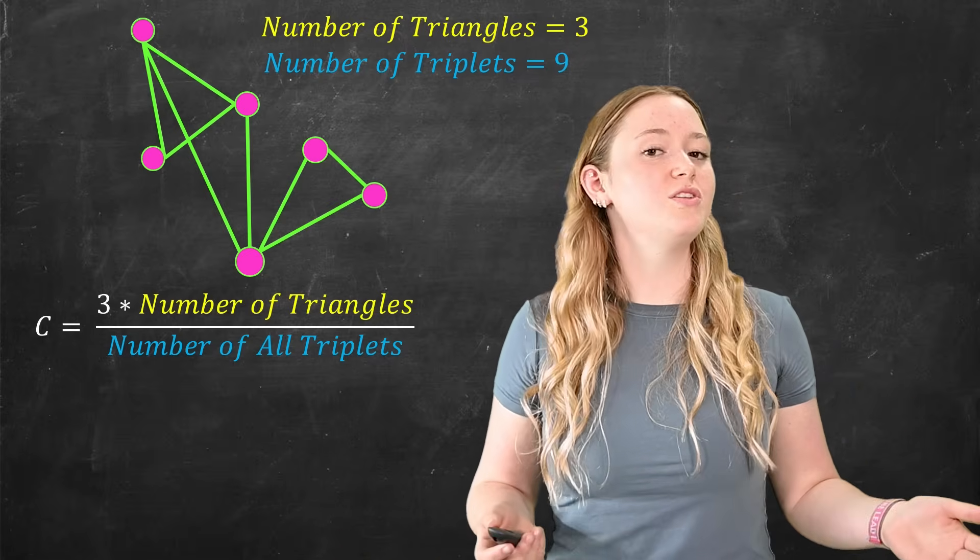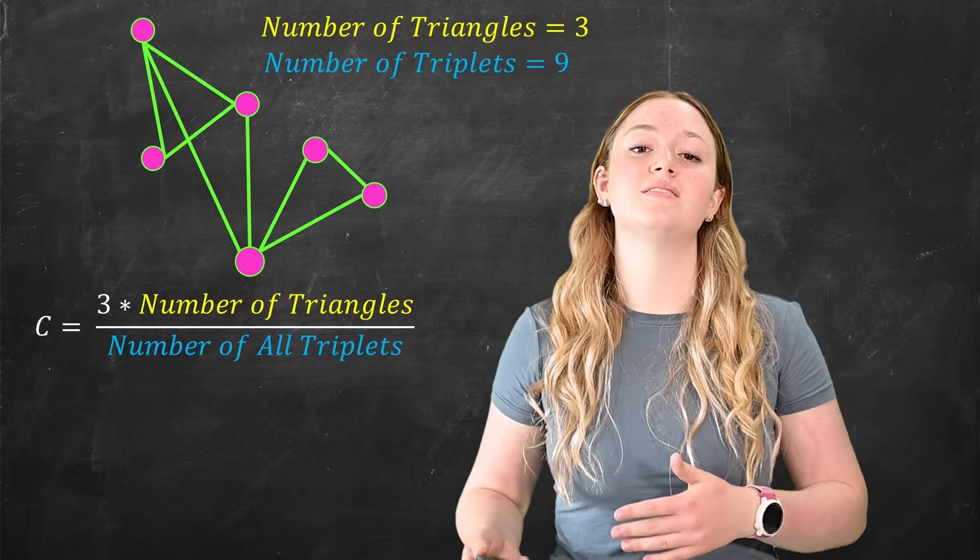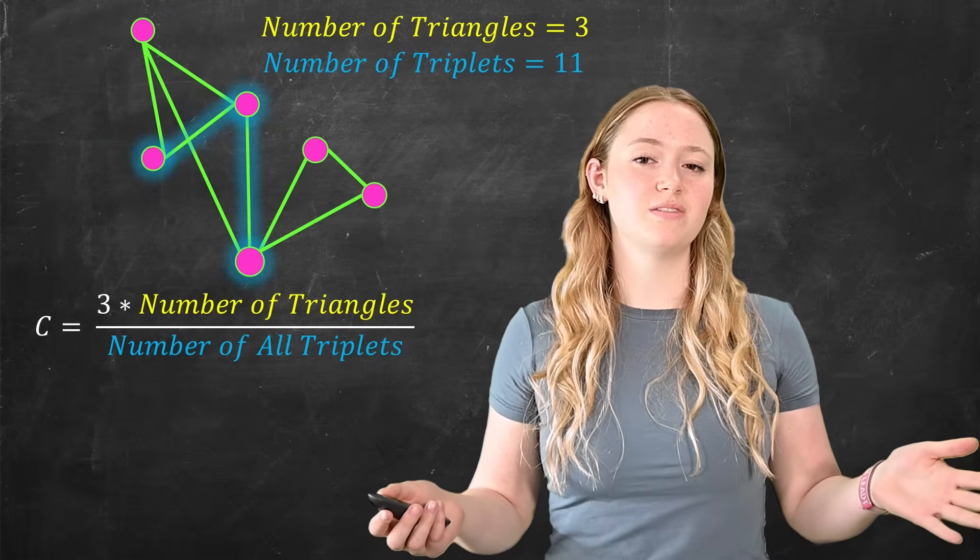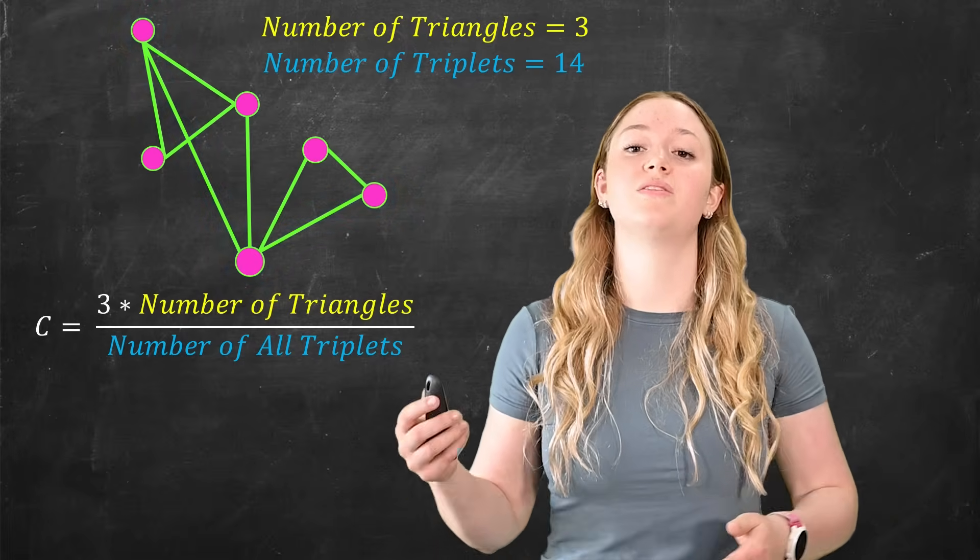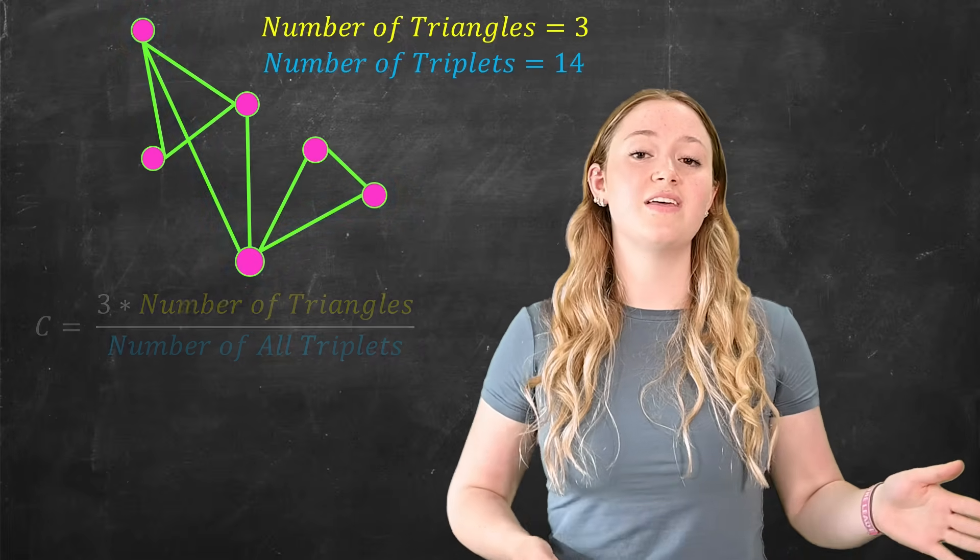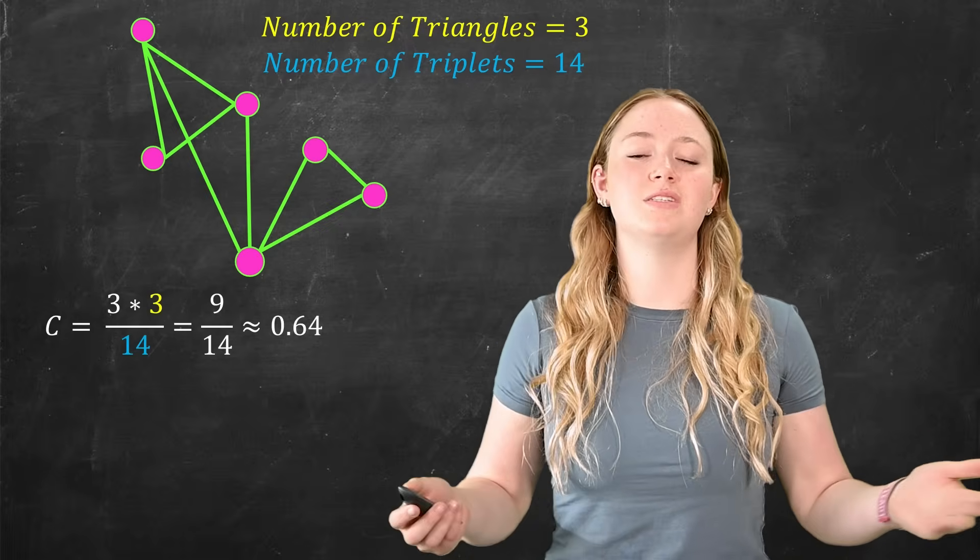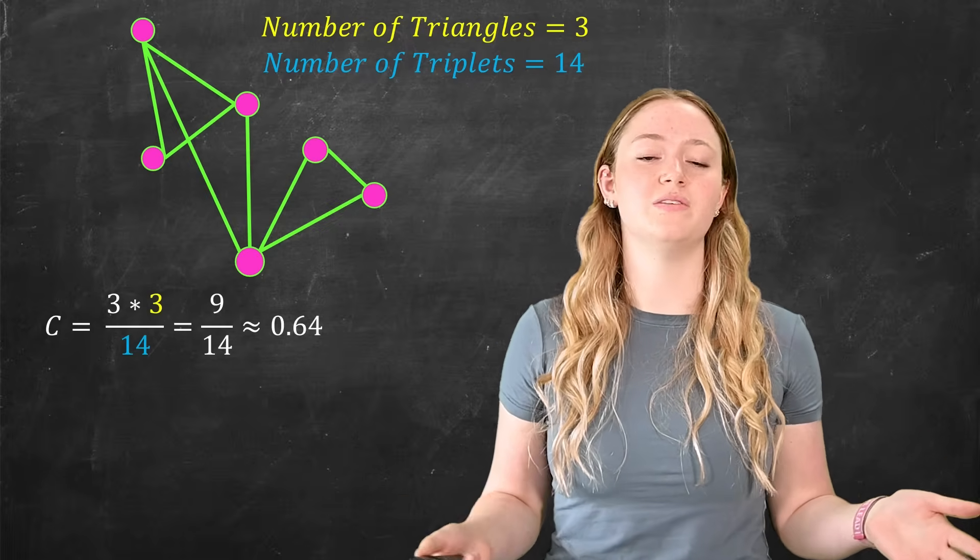But what about the triplets that aren't a part of these triangles? Well, we've got five of those. So we've got 14 triplets and three triangles. Putting that together, we have 9 over 14 or 0.64 as our clustering coefficient.